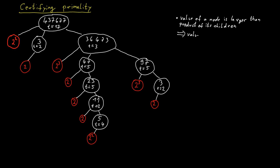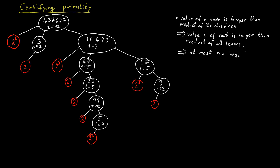In particular, the value at the root node must be larger than the product of the values of all the leaves in the tree combined. These leaves are exactly the nodes that are powers of 2. Each leaf has value at least 2, and the product of all leaves is no more than s. Therefore, there can be at most log s many leaves — if we had more, their total product would exceed s.